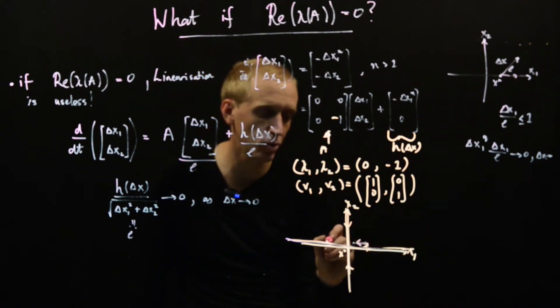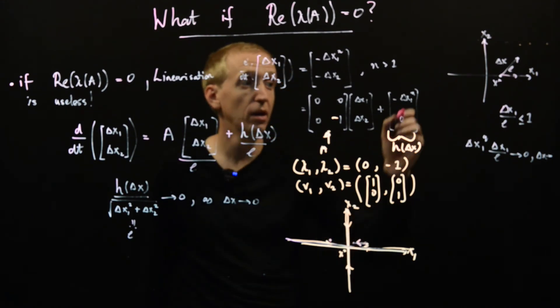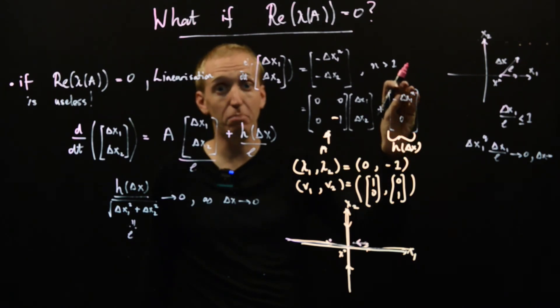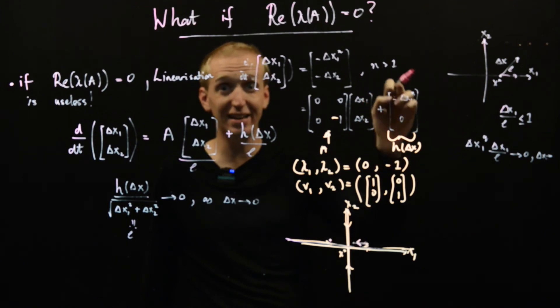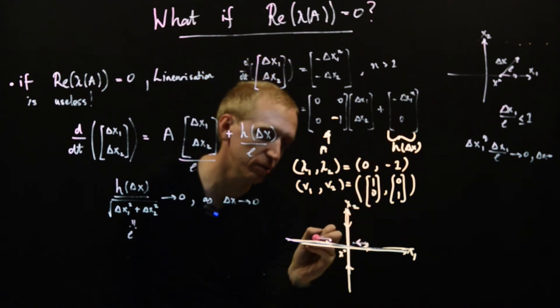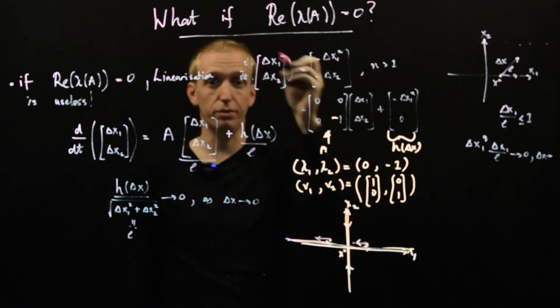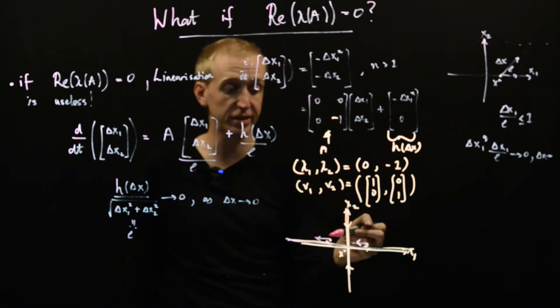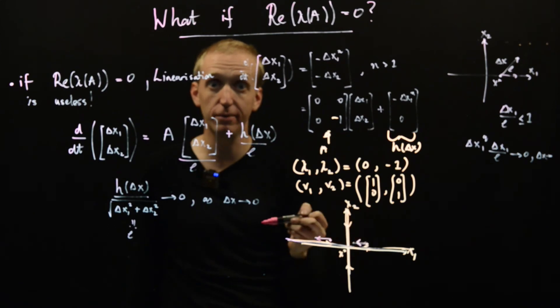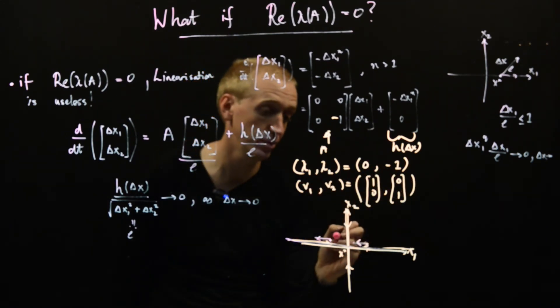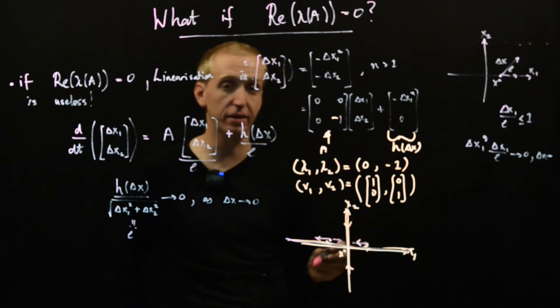But now let's imagine what happens over here. So we put in negative values of delta x1. Well, if n is even, even though delta x1 is negative, delta x1 to the n will be positive. And so this term will be negative again, and will be pushed this way. So our higher order term tells us what x dot will do. And in this case, it's telling us it'll be pushed that way. Whereas if n is odd, the opposite is true, and we will be pushed this way.